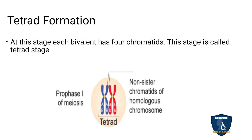The next stage is tetrad formation. As seen in the diagram, the bivalent chromosomes become four chromatids. That condition is called tetrads.